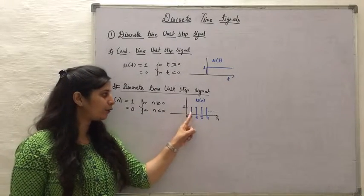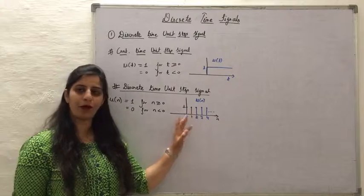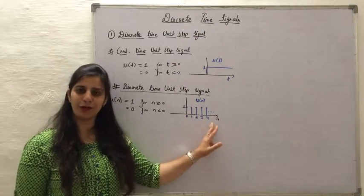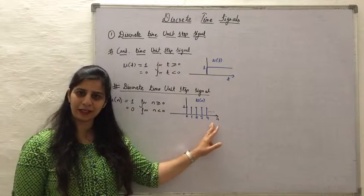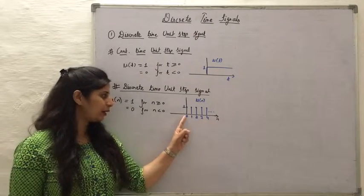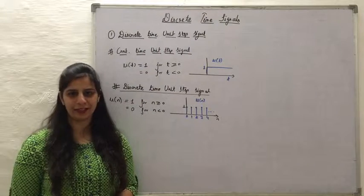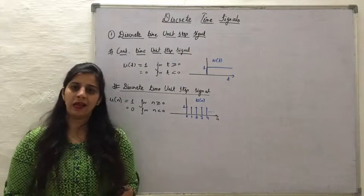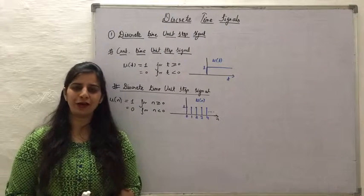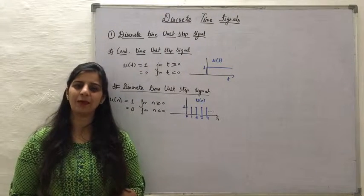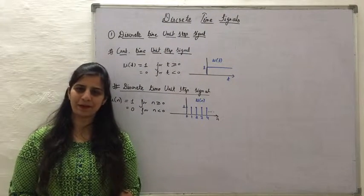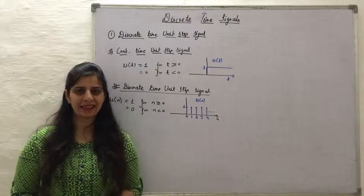In waveform form, the signal has a value of 1 for all positive integer values of n and a value of 0 for all negative integer values of n. Now let's look at the second type: the discrete time unit impulse signal.